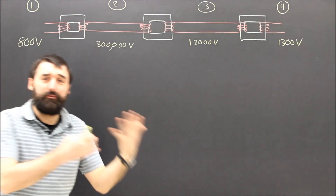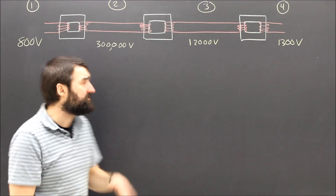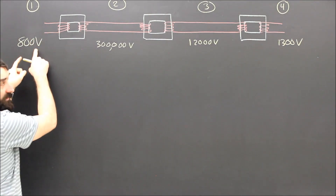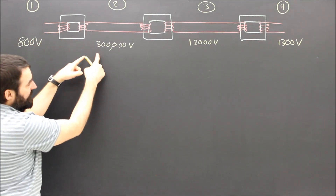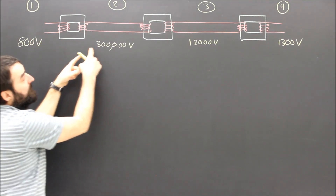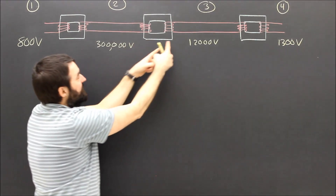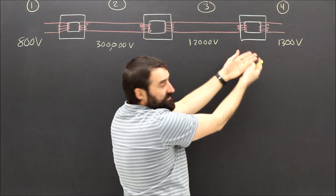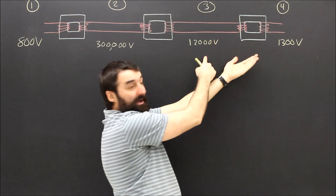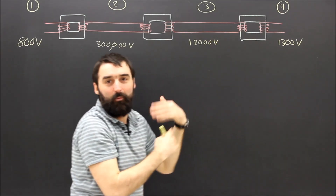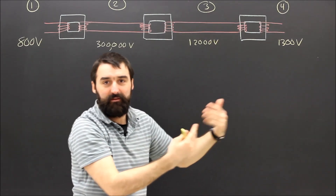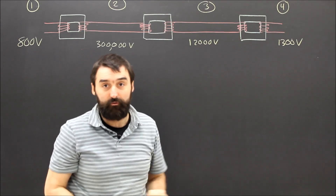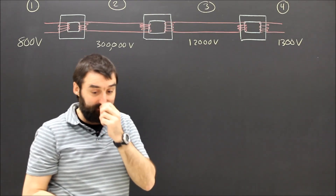Instead of calling voltage primary and voltage secondary, I'm just going to call them one, two, three, four — because here the primary is 800, the secondary is 300. But here the primary is 300 and the secondary is 12,000. And on this transformer the primary is 12. So let's just say one and two, two and three, three and four. That'll be a little simpler.